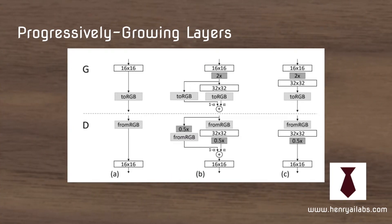Getting more into the weeds of how this is implemented: they progressively fade in the new layers. They don't just add a new layer and immediately start training it — they have a smoother integration technique. What they do is take the 16x16 output and upsample it to 32x32 using just nearest neighbor interpolation.